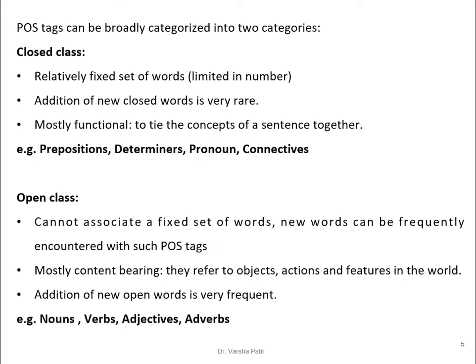Open class cannot associate a fixed set of words; new words can be frequently encountered with such POS tags. They are mostly content-bearing — they refer to objects, actions, and features in the world. Addition of new open-class words is very frequent. For example, every day we can get new nouns (names of persons or things). Nouns, verbs, adjectives, and adverbs come under the category of open class.